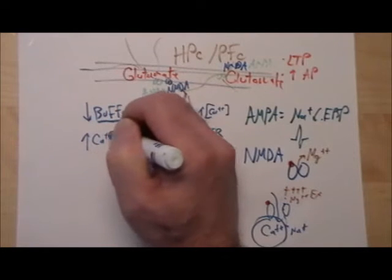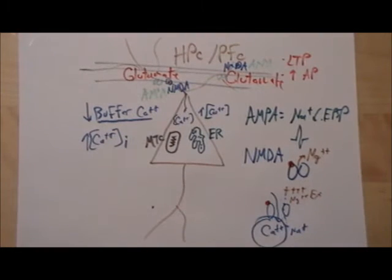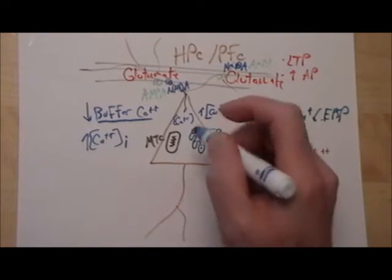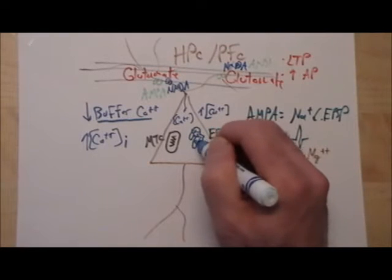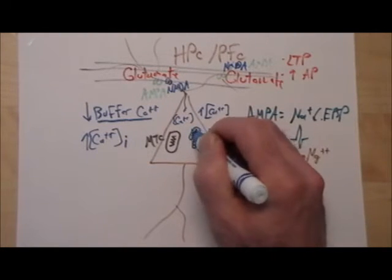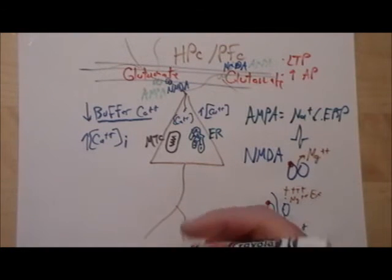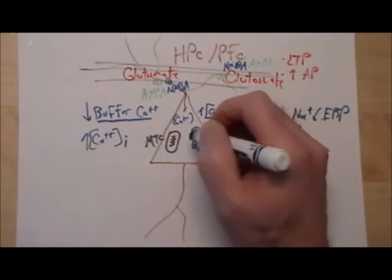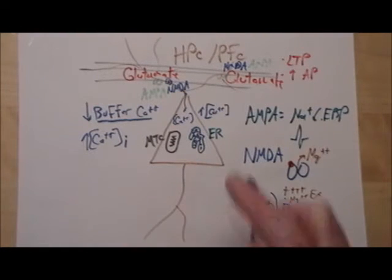But when you have a decreased ability to buffer calcium or high levels of calcium concentration intracellularly inside the cell, what can happen is that endoplasmic reticulum starts to get overactive. So it's trying to store all that calcium, and it can't. So as it's working hard, it needs energy. So a lot of these neurodegenerative pathways are, in fact, interlinked.